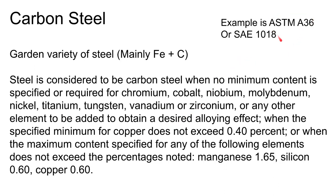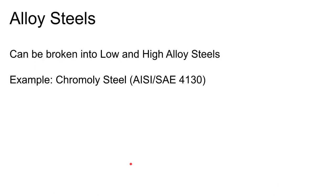You can also buy steels by specifying their ASTM designation — for instance, ASTM A36 is a common structural steel. Carbon steel really only needs iron and carbon; when you start adding other elements it becomes an alloy steel. A classic example is chromoly steel — containing chromium and molybdenum — designated AISI/SAE 4130.